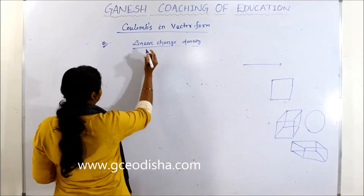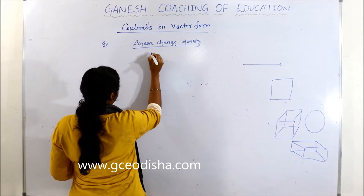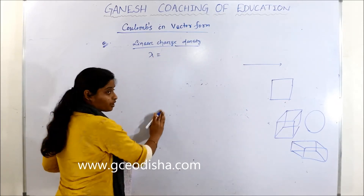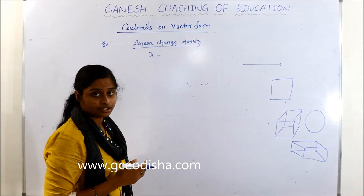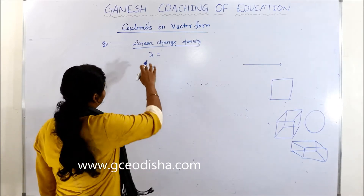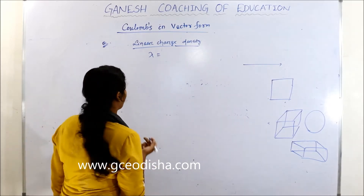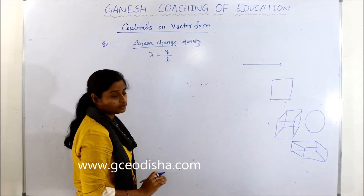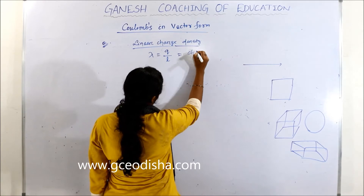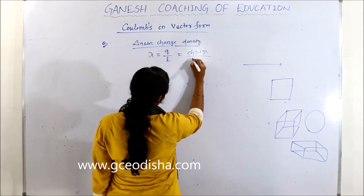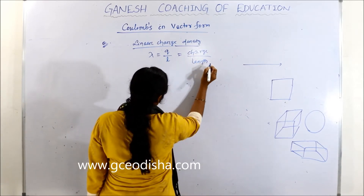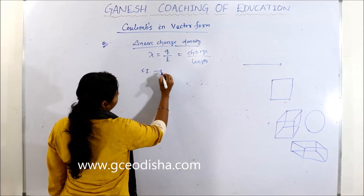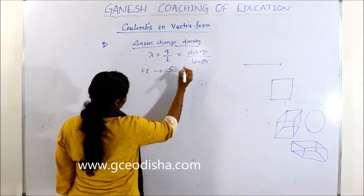We use linear charge density, symbolized as lambda. Lambda is equal to charge per unit length, and is called linear charge density. The formula is lambda equal to Q by L, that is charge divided by length. The SI unit is coulomb per meter.